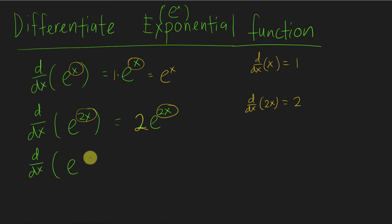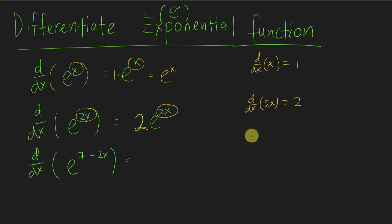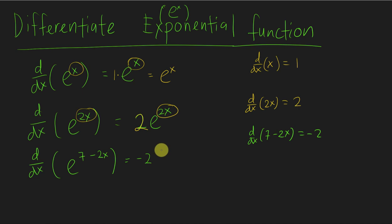To make this example slightly harder, maybe the power looks a bit complicated — say 7 minus 2x. A lot of students see something like this and panic. But it's very easy. You just imagine if you differentiate 7 minus 2x, what will you get? You will get negative 2, because the 7 is just gone — you get 0 for 7 because there's no x. So you write negative 2 at the front and then copy whatever you have: e^(7−2x).